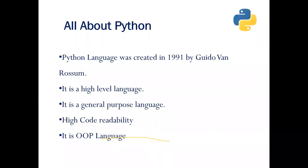Python was a language created in the year 1991 by Guido van Rossum. This is the person who developed the Python language in 1991. A quick fact: Python is not a very old language.